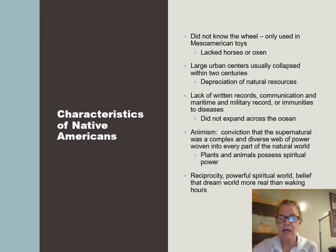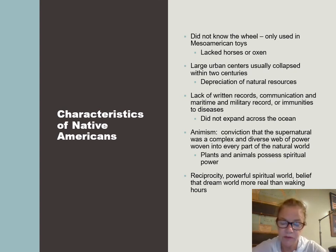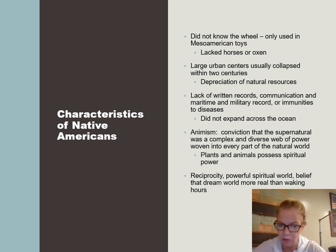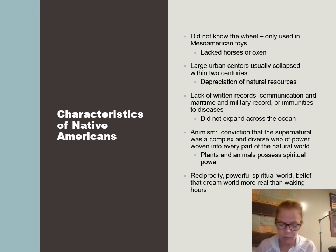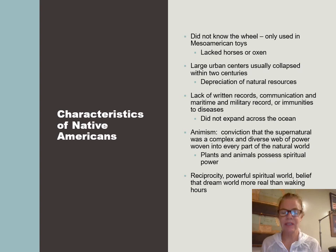The characteristics and differences between Europeans and Native Americans were vast. Native Americans didn't have the wheel because they lacked pack animals. They didn't have large urban centers. They counted on natural resources, so there's a depletion of that — Cahokia is an example. They didn't have written records, just passing things down verbally from one generation to another. They didn't have immunities to diseases. Their religion was quite different — they believed in animism, that the supernatural controlled everything and everything was interwoven: the spirit world, animals, humans, and plants.